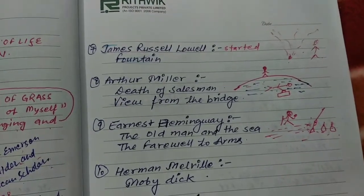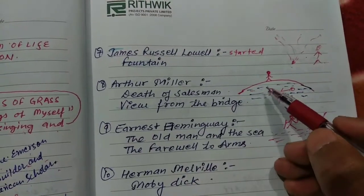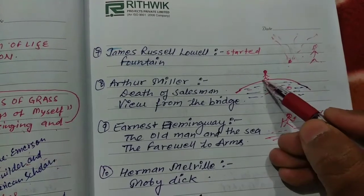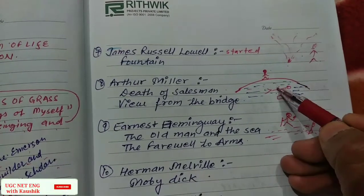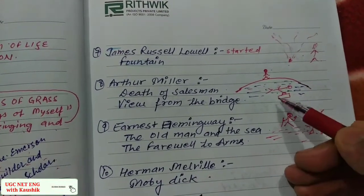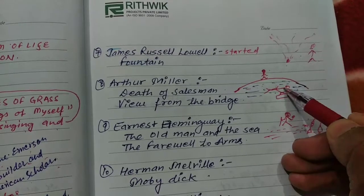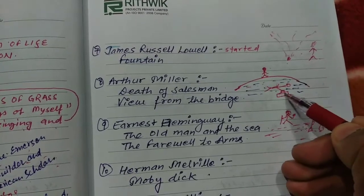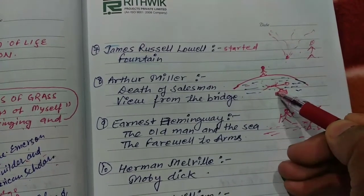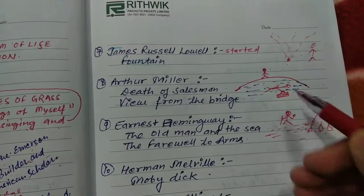Arthur Miller's works are 'Death of a Salesman' and 'View from the Bridge.' So Arthur Miller is standing on a bridge and he is viewing — looking at — a salesman. How do we know he is a salesman? He has a bag here.